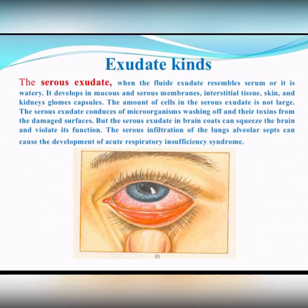Serous inflammation: when the fluid exudated resembles serum or is watery. It develops in mucous and serous membranes, in perivascular tissue, skin, and kidney capsules. The amount of cells in the serous exudate is not large. The serous exudate promotes washing off of microorganisms and their toxins from the damaged surfaces.